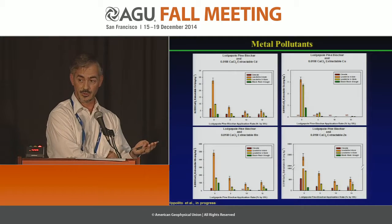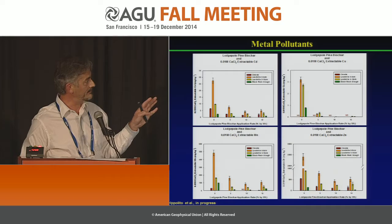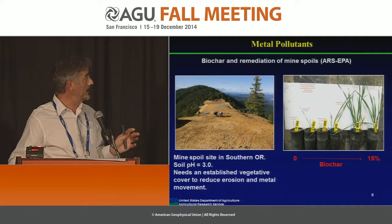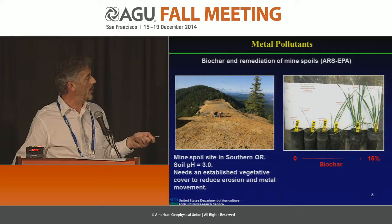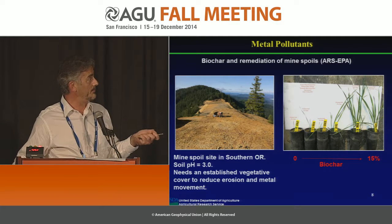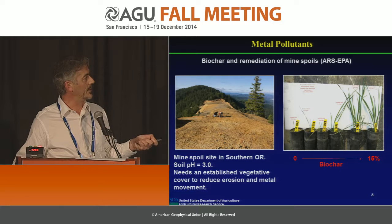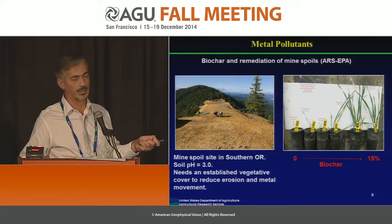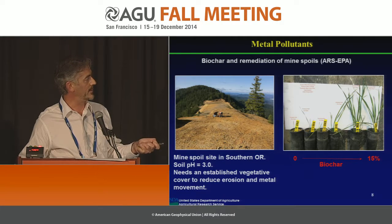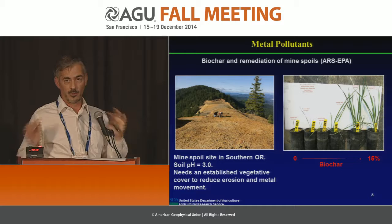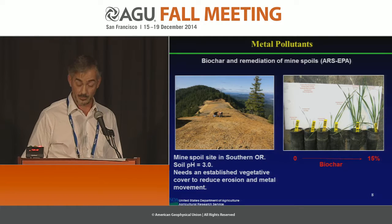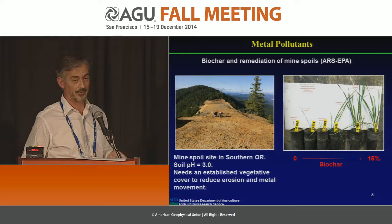We're hoping to gear this project up at a mine site in southwestern Oregon that has a pH of 3 — obviously nothing is growing on it. We're looking for funding, but in the meantime we're taking some of these soils and adding biochar to see if we can do any good. Preliminary results on the right-hand side show going from 0% to 15% biochar growing fescue. We're hoping to take this to the field next year at a site that has a low pH contaminated with heavy metals.